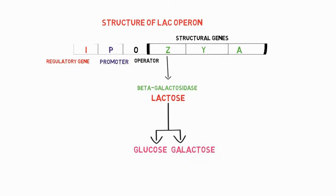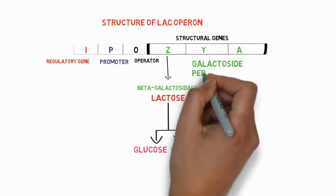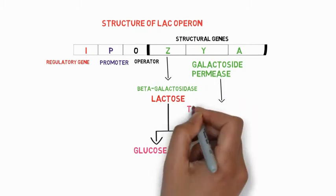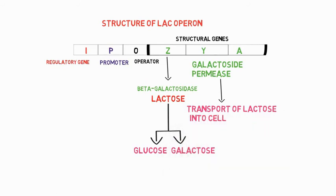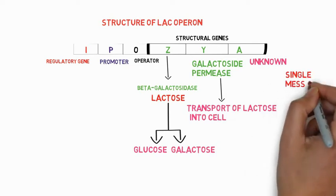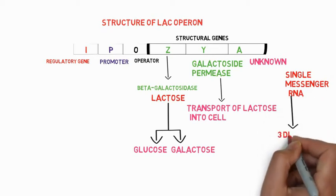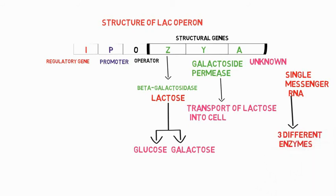Now the structural gene Y encodes for enzyme galactoside permease. This enzyme transfers the lactose into the cell. Now the third one encodes for enzyme transacetylase and its function is unknown. These structural genes produce a single messenger RNA that gives rise to three independent translations for the synthesis of three different enzymes.